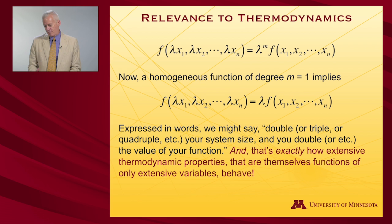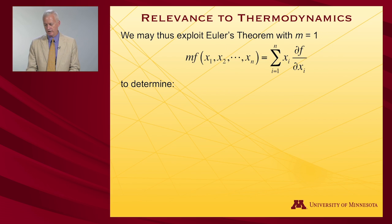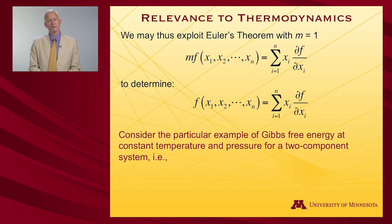Thermodynamic functions are homogeneous functions of degree one. Let's exploit that a bit and take Euler's theorem plugging in m=1. It says that the value of the function is equal to the variables of the function times the partial derivative of the function with respect to those variables. Let me take a particular example. Let's take the Gibbs free energy at constant temperature and constant pressure. Temperature and pressure are not extensive variables—they're intensive variables. I'm going to hold them fixed, so that means the free energy will now only depend on, say, number of particles, for instance. I'll use a two-component system, so I'll have two different kinds of particles: some of component one, some of component two.